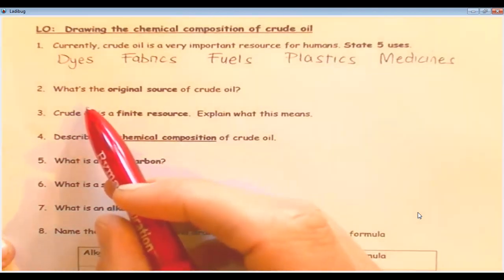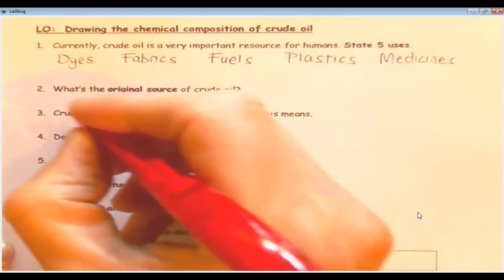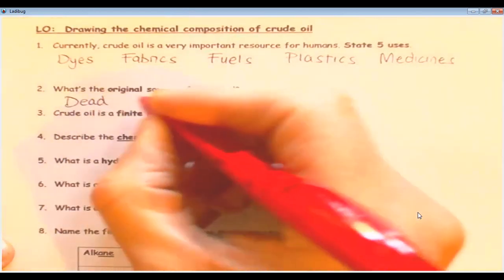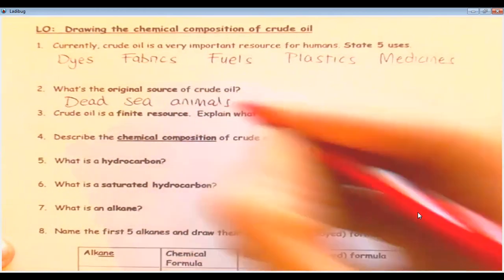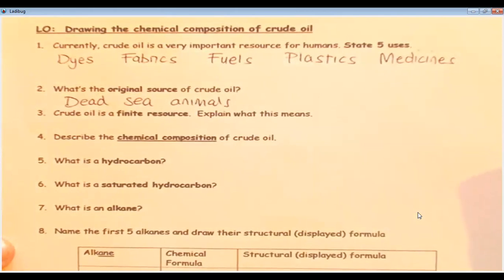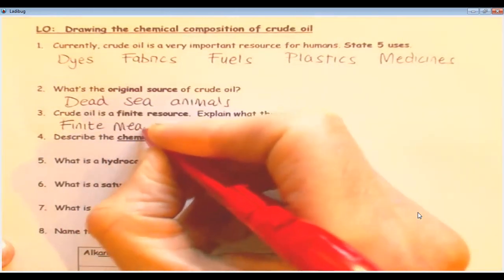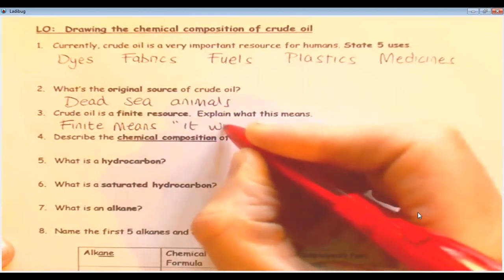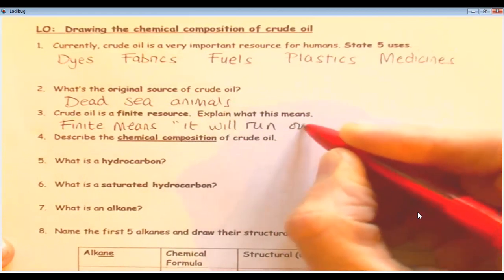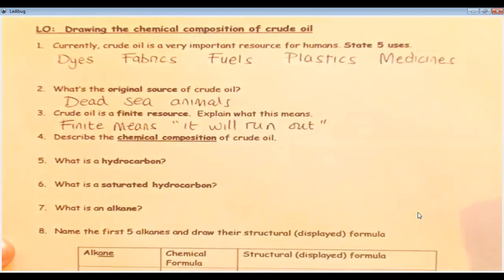Now, it says here, what's the original source of crude oil? Strangely, it's dead sea animals from hundreds of millions of years ago. And then it says crude oil is a finite resource. Explain what this means. I'm going to write finite means it will run out. So essentially, as human beings, we're using it at a faster rate than which it can be produced. So it's going to run out at some point, which we know.